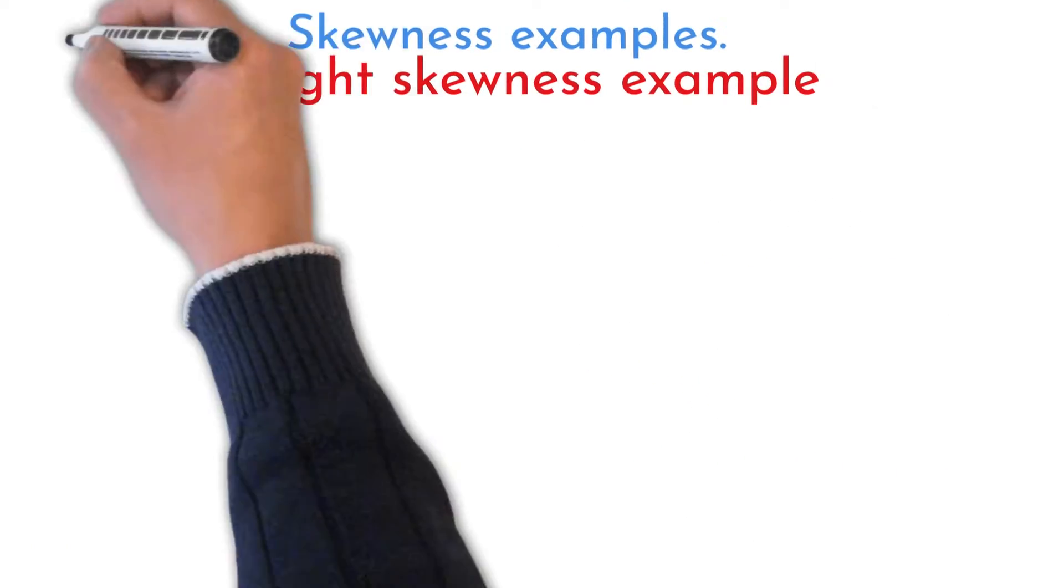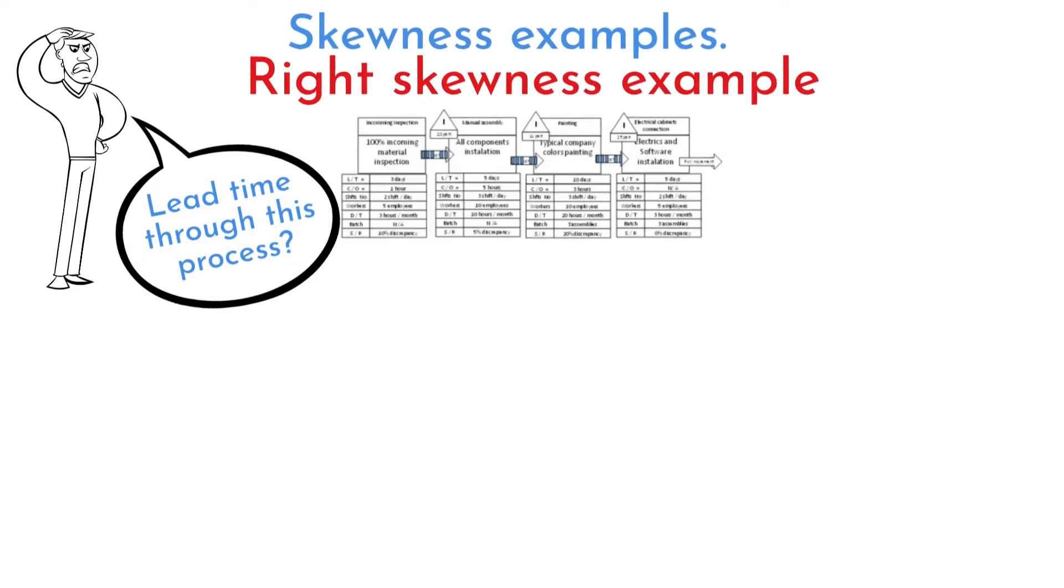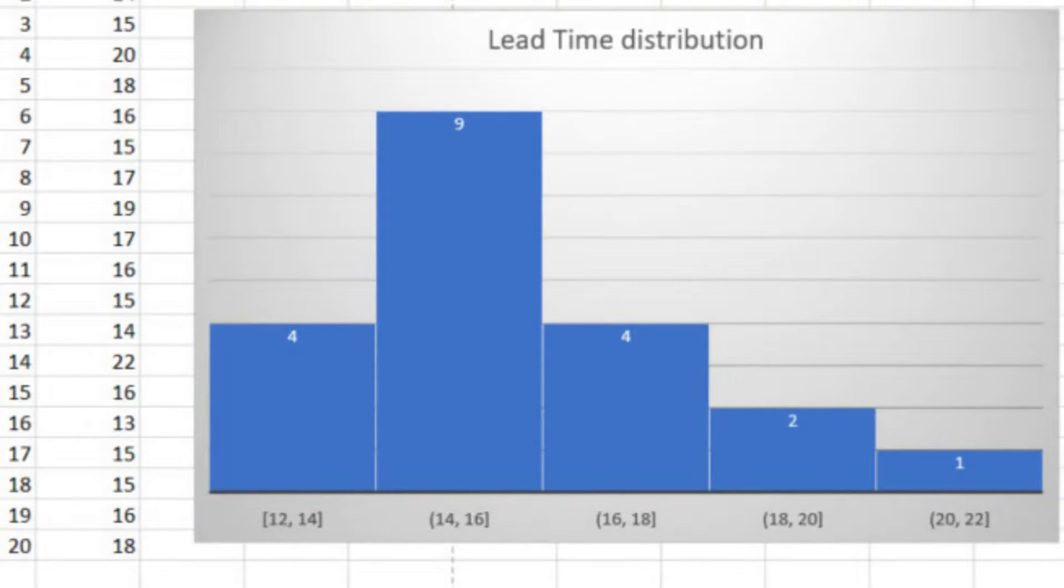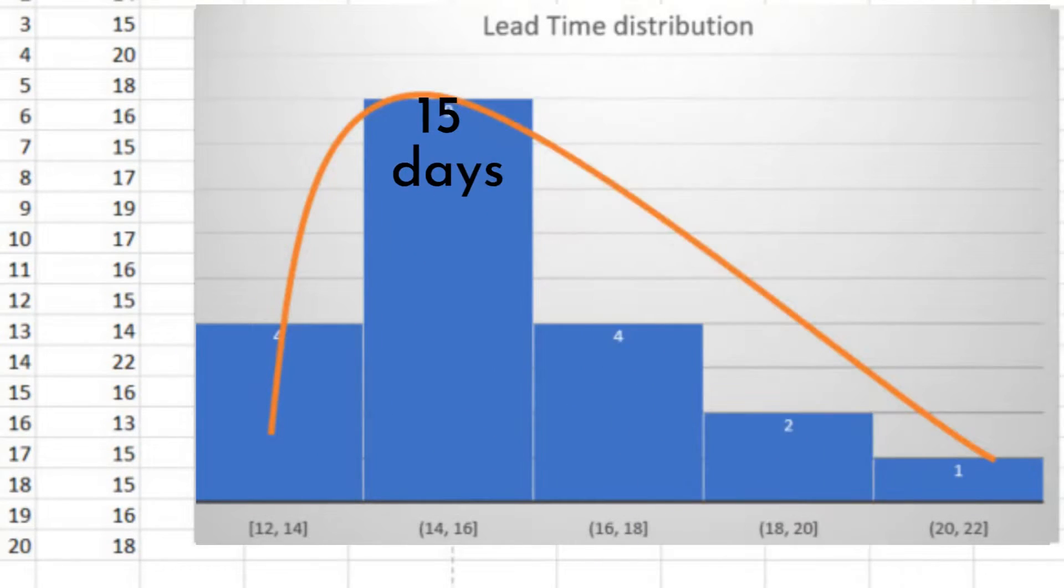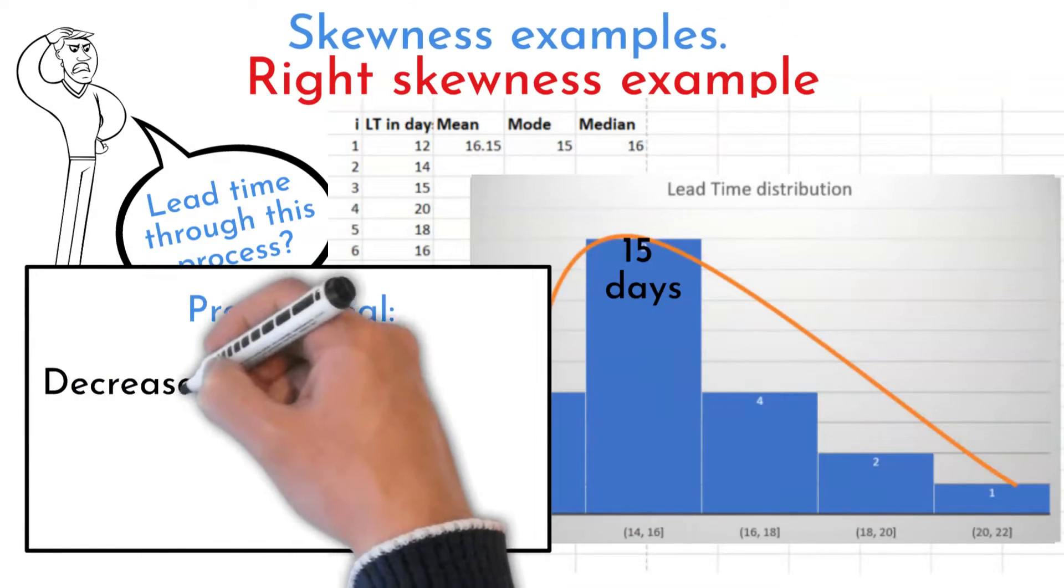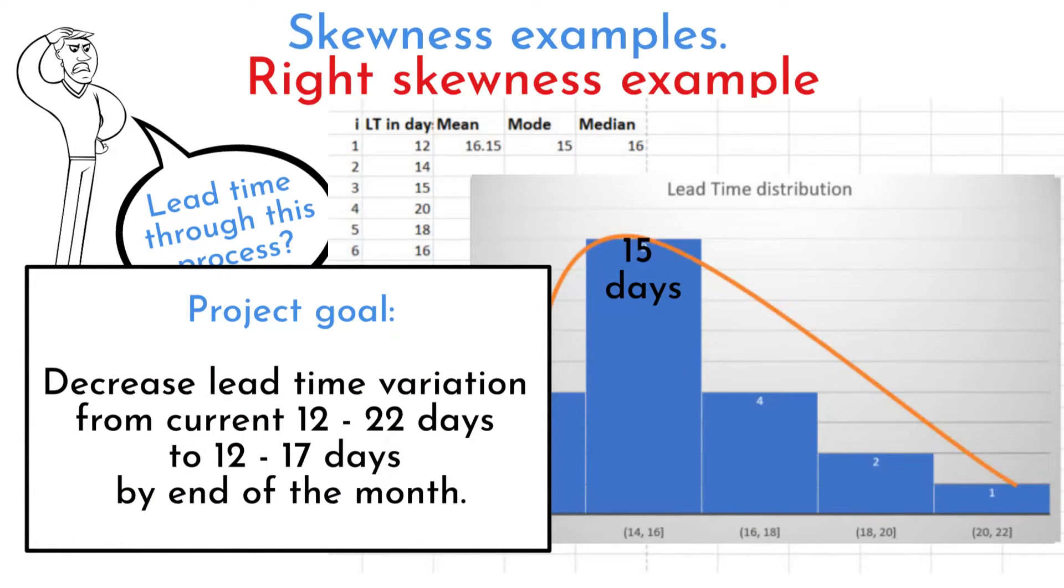Example of right skewed distribution. Machining supervisor wanted to know what is parts lead time distribution. Together with his team put together data. Majority of parts lead time is 15 days. However, there are some with 20 days lead time. Goal is to improve process to get normal distribution around 15 days. This can be a great project goal definition. This example will be used to show you how to create histogram in Excel after left skewed distribution example.